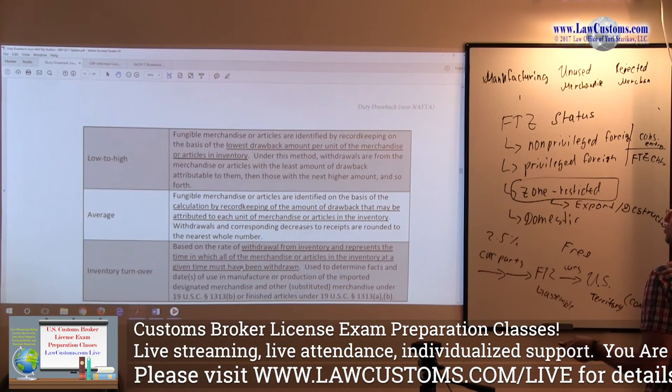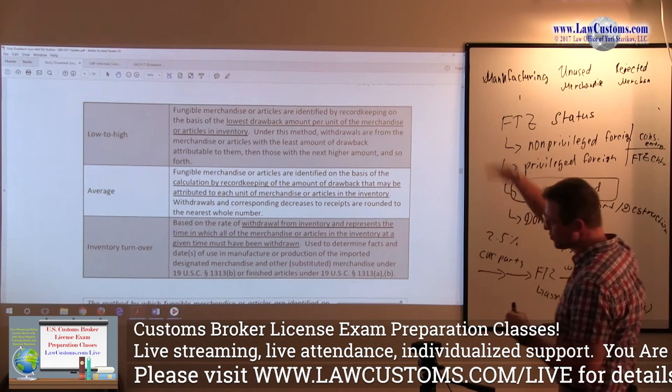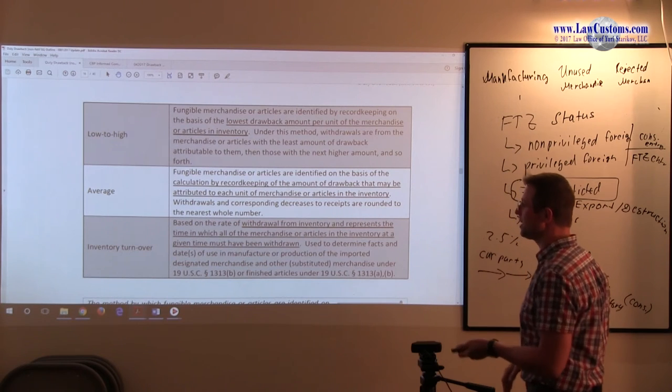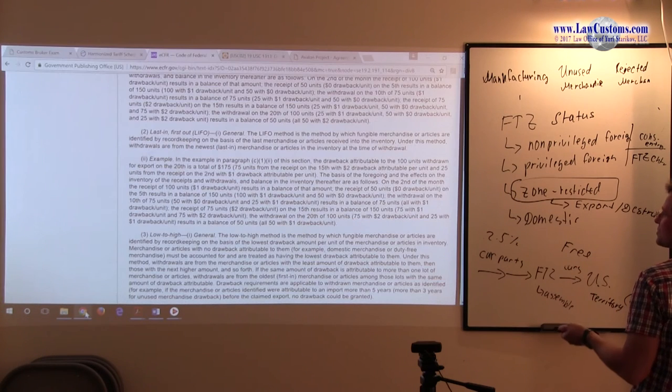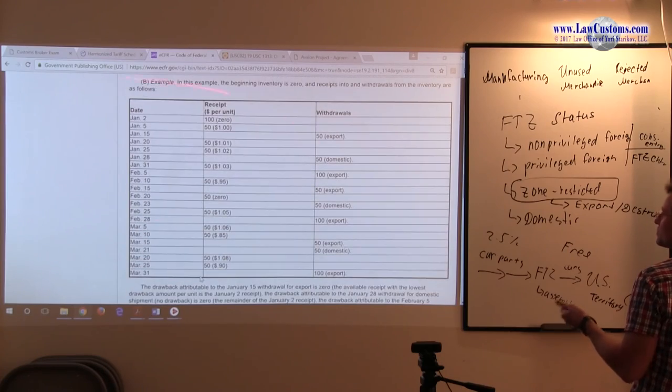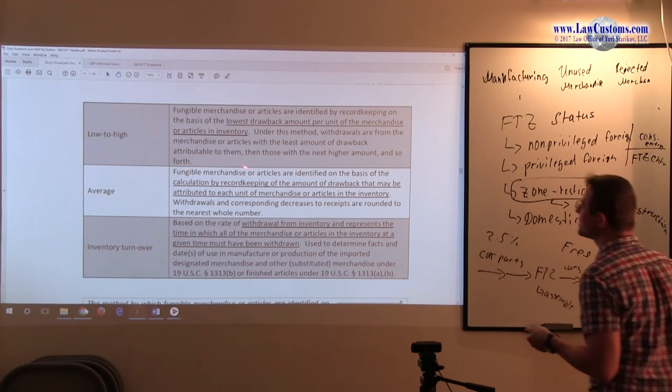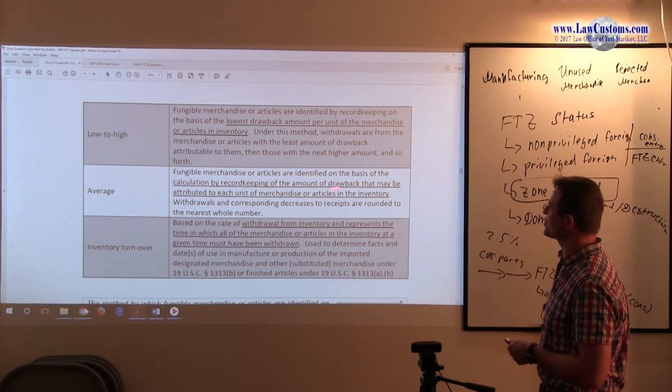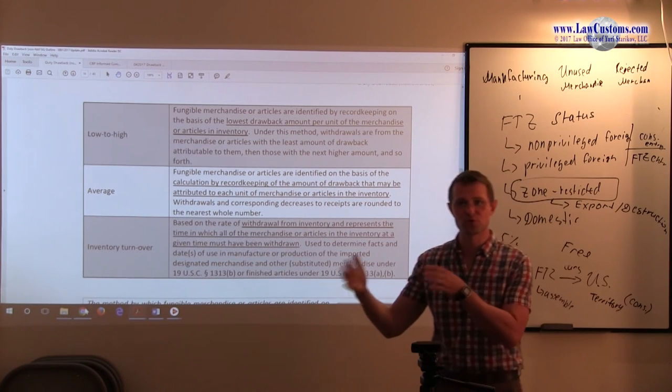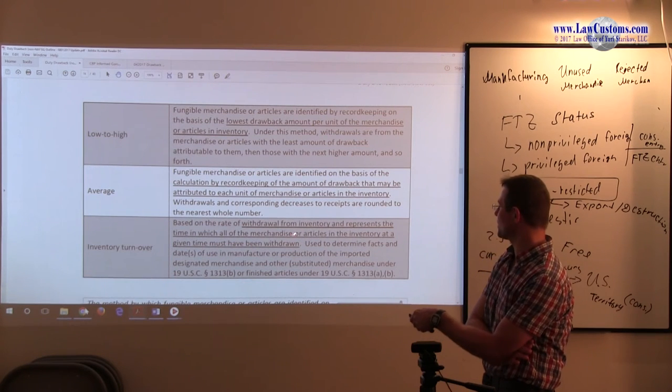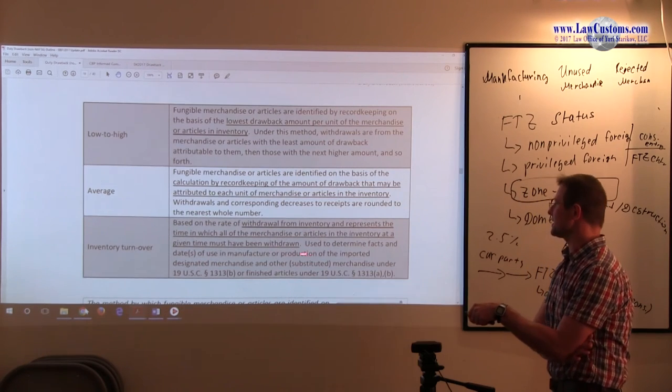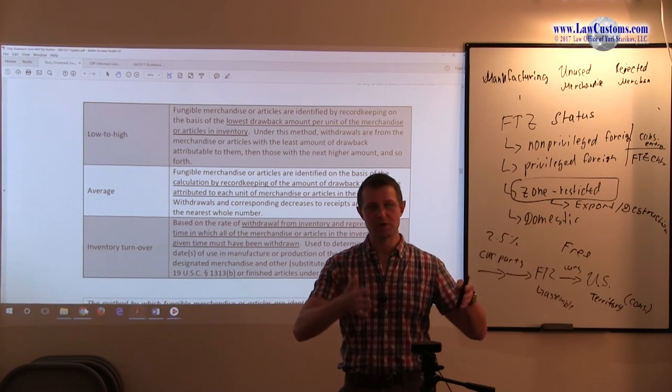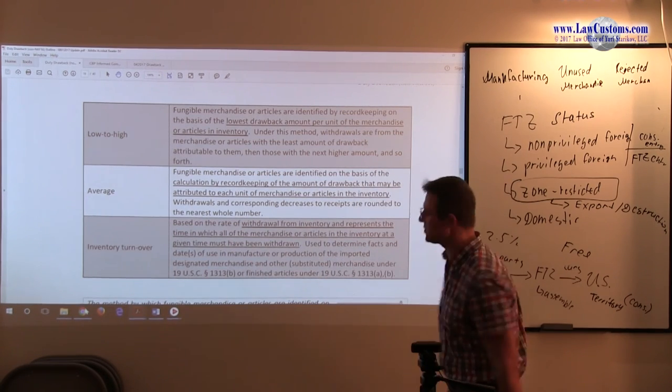The average method involves calculation based on attribution to each unit - you do proportional calculations. Low-to-high method, as we just saw, means you go back and forth, and sometimes you make zero claims as we saw in the table. Inventory turnover, as the name implies, involves making a projection to see the amount of inventory you had at any given time, depending on the time period.